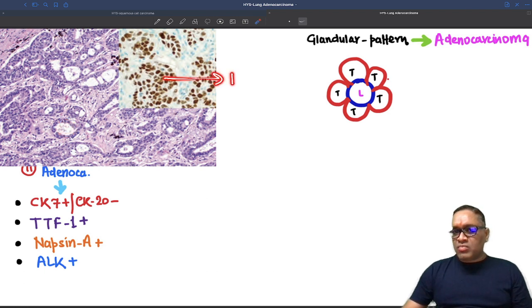And this brown color is the immunohistochemistry, which is positive. And that is the thyroid transcription factor 1.